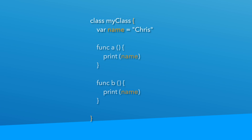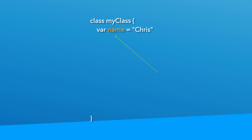Here's the kicker: when you declare a variable inside the class but outside of any functions, it's actually called a property of that class. Now let's see this in action.